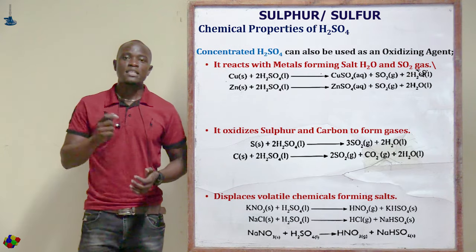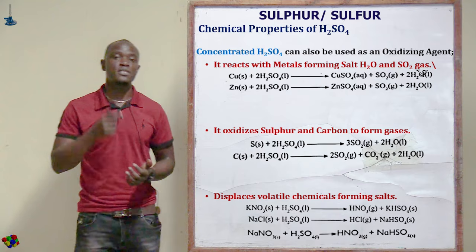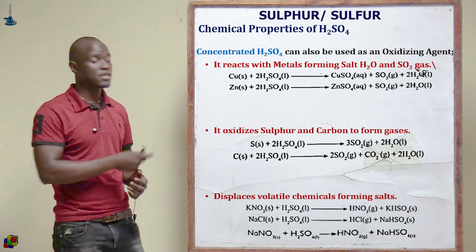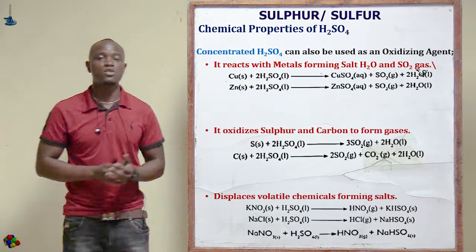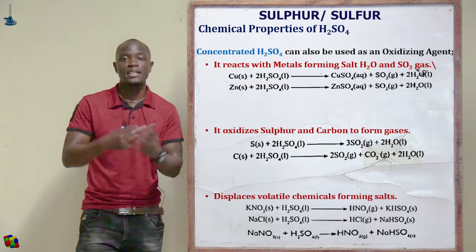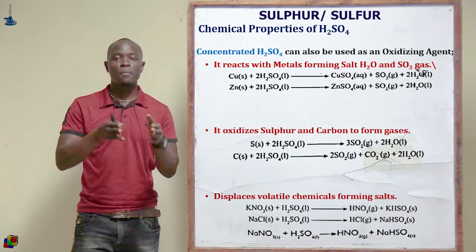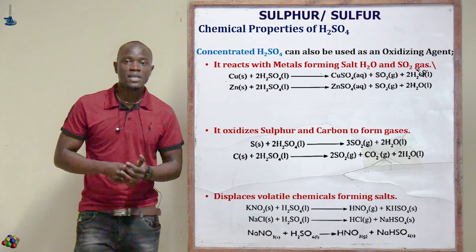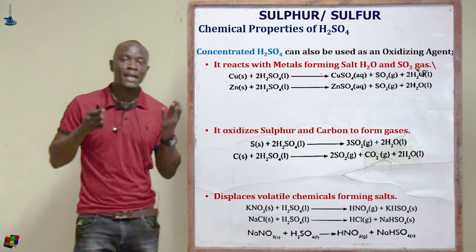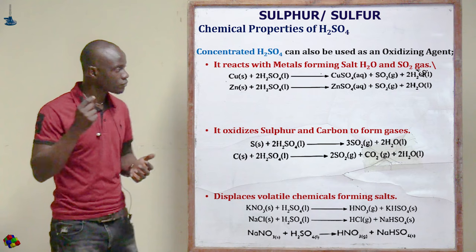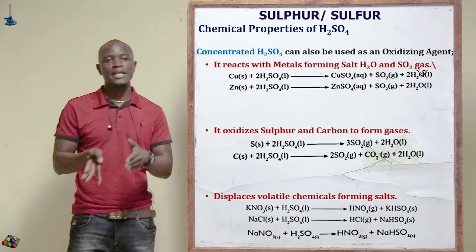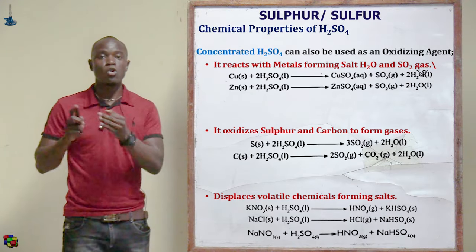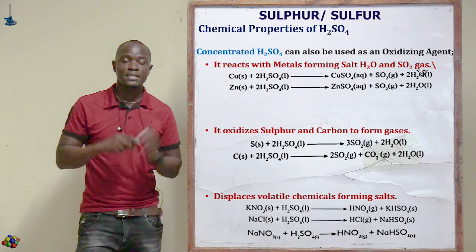Concentrated sulfuric acid can also be used as an oxidizing agent. It reacts with copper to form copper sulfate plus sulfur dioxide plus water, and reacts with zinc to form zinc sulfate plus sulfur dioxide plus water. So apart from being a dehydrating agent, it can also oxidize copper and zinc to copper sulfate and zinc sulfate respectively.